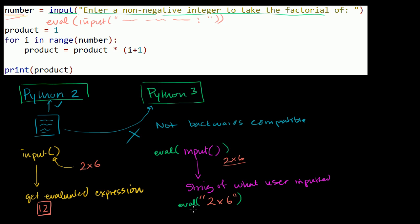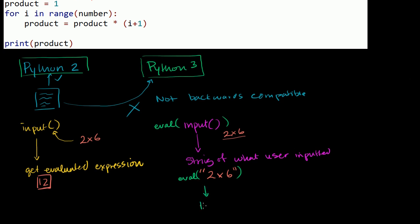The user put some input, so then you're doing an eval on what the user inputted, and then this will return 12.